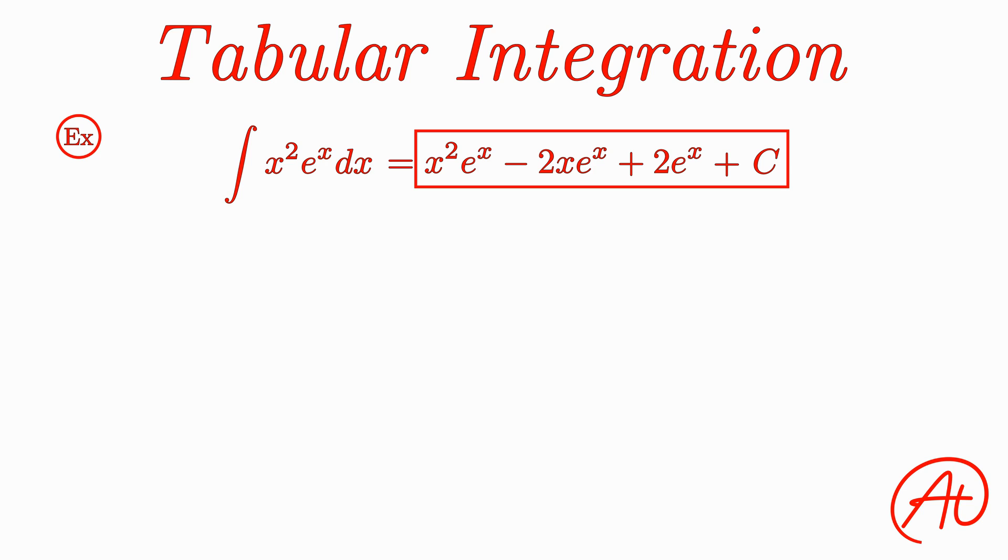Oof, that was a mess. Thankfully, there's a much easier and compact way to do this. This is where tabular integration, or the tabular method, comes to our rescue. And you can use this method whenever you are solving an integral that has repeated integration by parts, and where the u function that you will be repeatedly taking the derivative of eventually goes to 0.